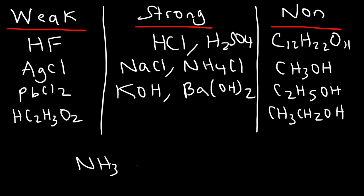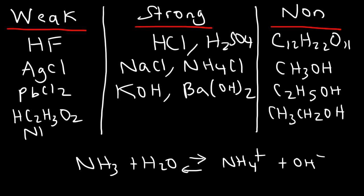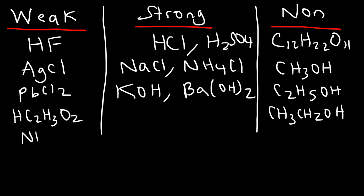What about ammonia, NH3? Ammonia is a weak base. When you put it with water, it grabs a hydrogen from water, forming ammonium and hydroxide. So NH3 is a weak electrolyte — it does cause ionization to occur in water and creates ions.